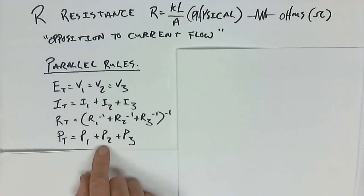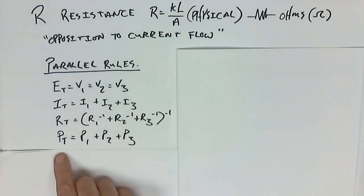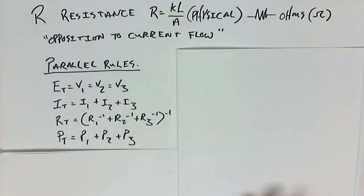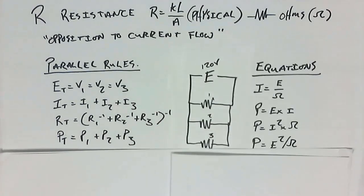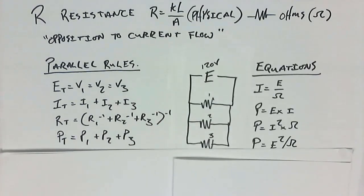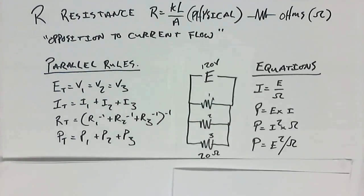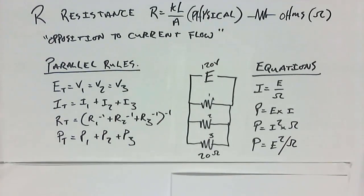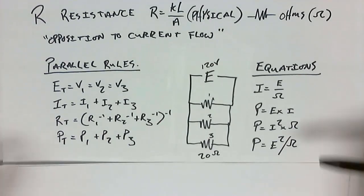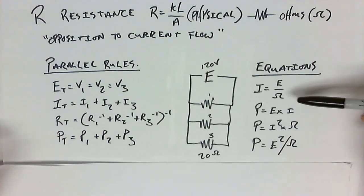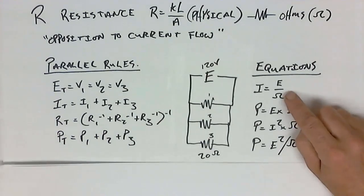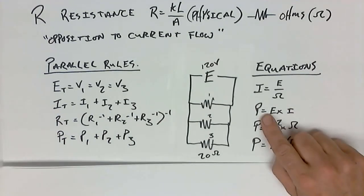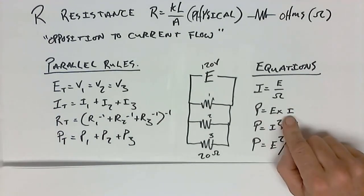I prefer the negative exponent way because it's easier to see in my calculator. And finally, resistors consume power, so P1, P2, P3 add together to give us the total power. If we look at the equations used to calculate these values, we've got I is equal to E over ohm — that's Ohm's law. Then we've got our power formula, E times I.